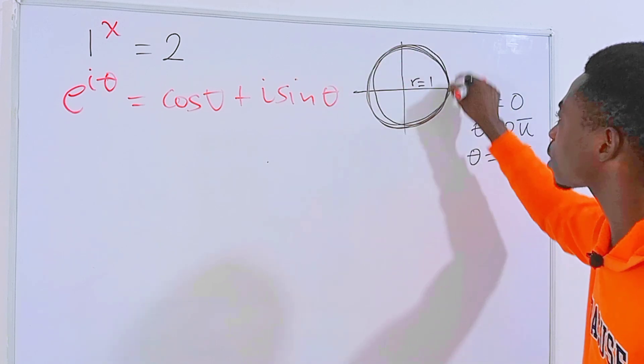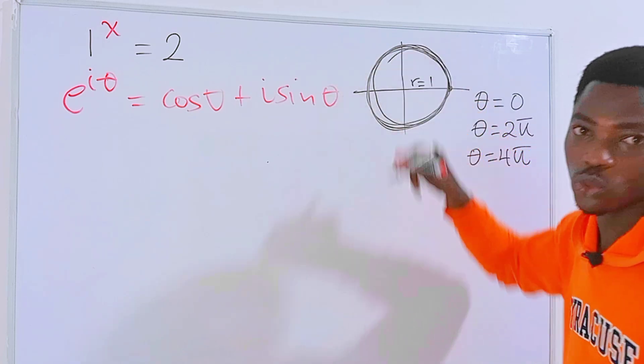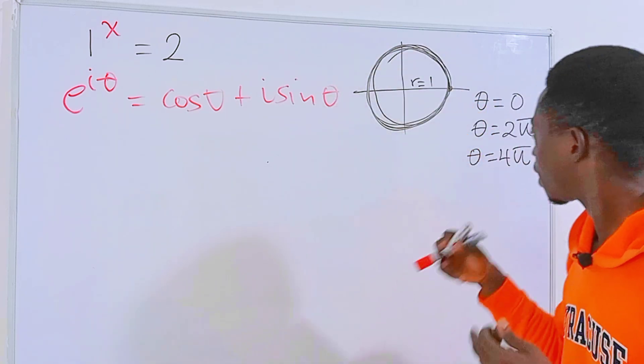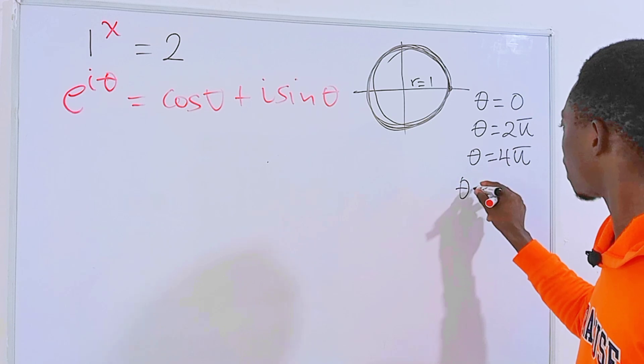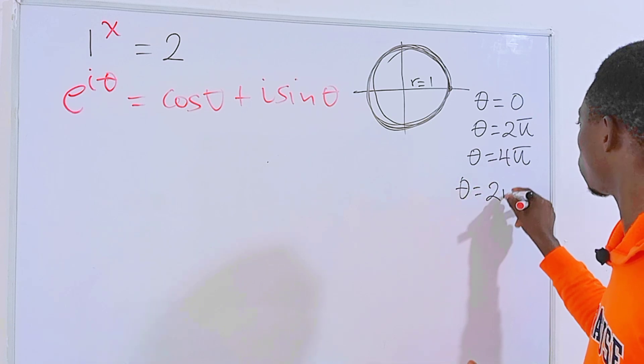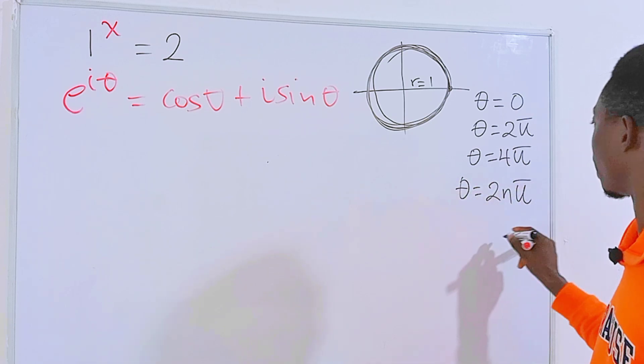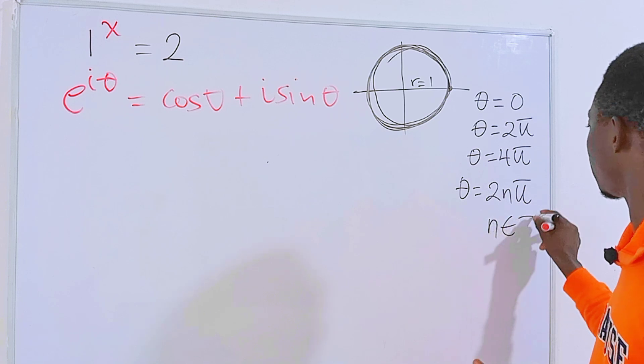We can stand here and continuously rotate just like that. So to get the general angle for theta, this will simply be theta equals 2nπ, where n is an integer.